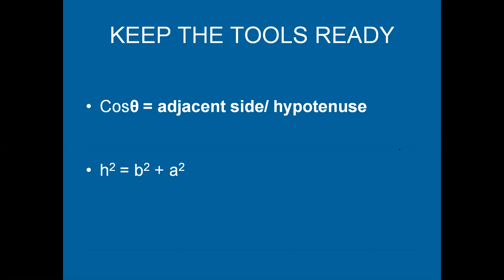Now let us have a quick recap of what is an electric dipole, which we have already discussed in the previous video. We discussed that the electric dipole moment equation is p = 2qa, and the direction of dipole moment will be along the line joining −q and +q.